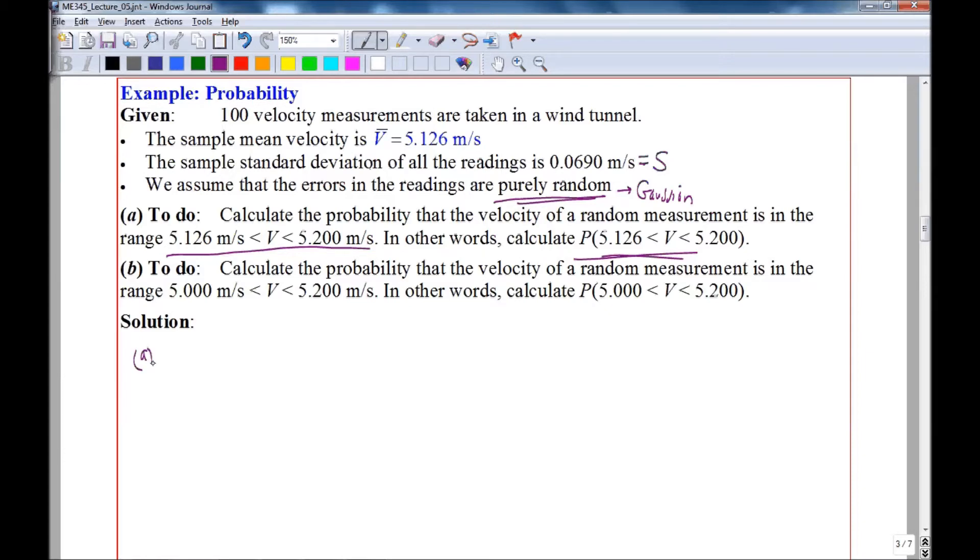So what we'll do is we'll calculate Z1, which is defined as V1 minus mu over sigma, where in our case, instead of V, let's use X to be consistent with our notation. So we'll approximate this. Since we don't know mu and sigma, the population mean and population standard deviation, we'll approximate these as the sample mean and the sample standard deviation.